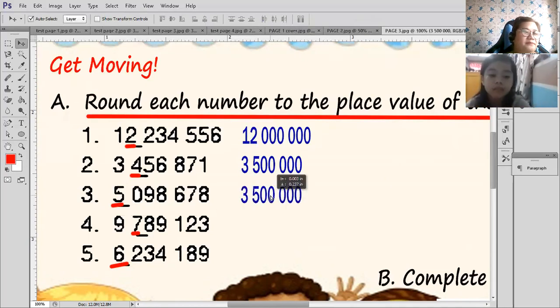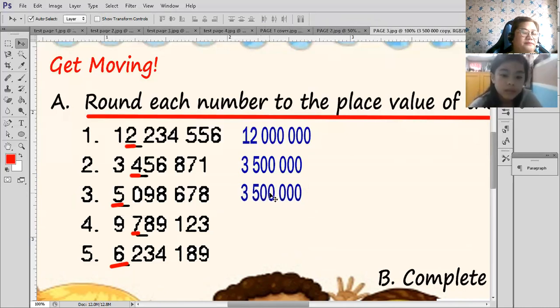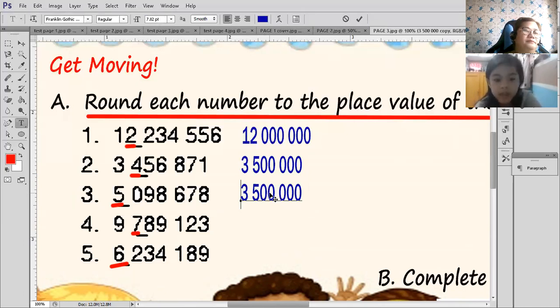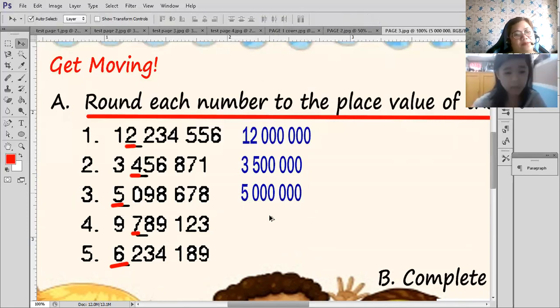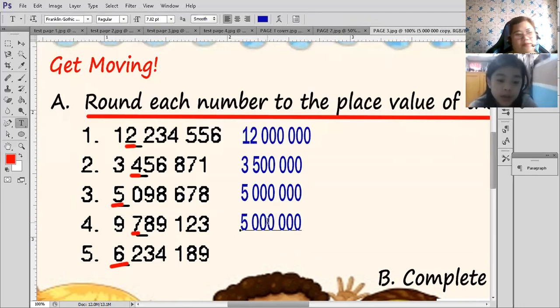Number 3. 5,000,000. Why? Because the number that's next to 5 is actually 0, so it's less than 5. Very good.